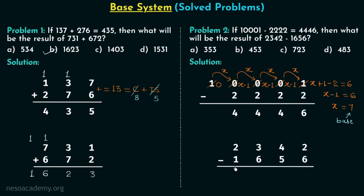Now we perform 2342 minus 1656 in the septal number system, and this is a homework problem for you. Try to find the answer and select the correct option — and once you have the right option, don't forget to post it in the comment section. This is all for this lecture; I will see you in the next one.